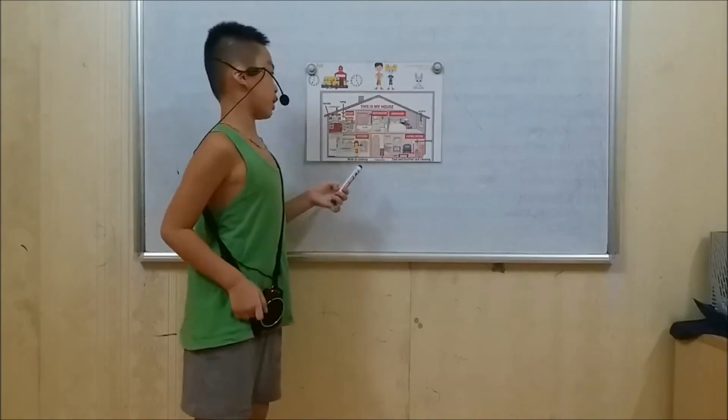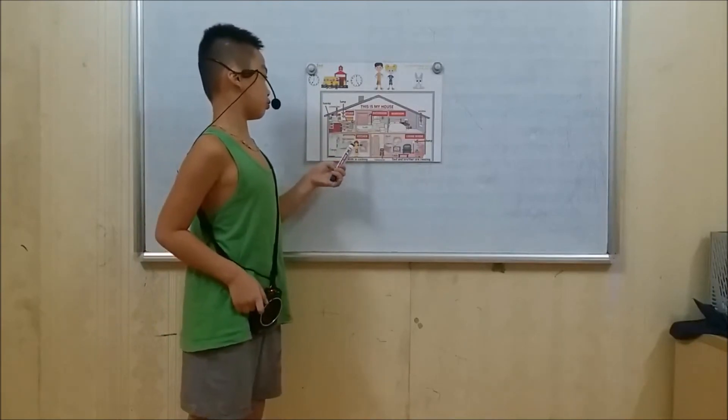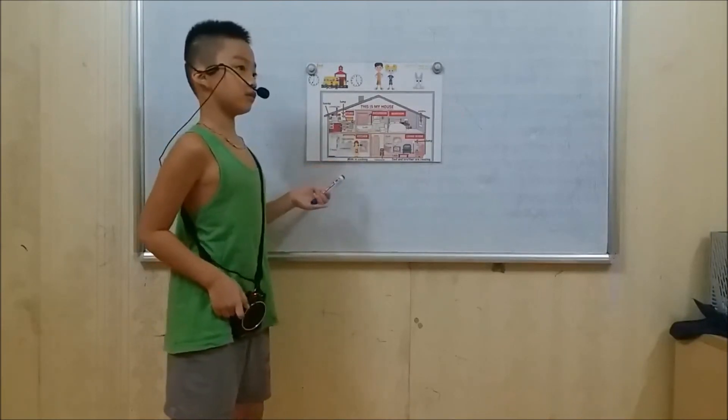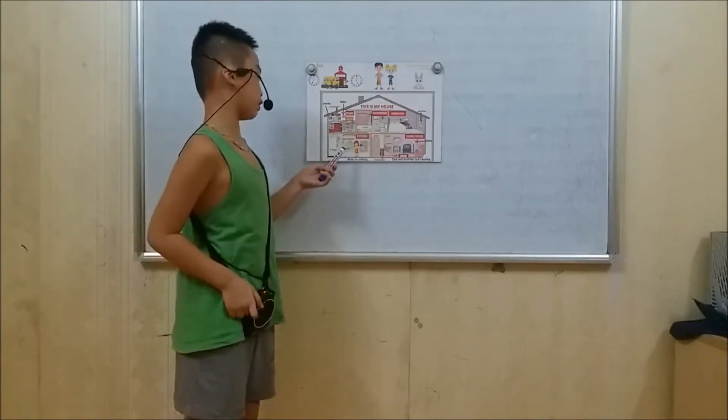Under the bedroom is a kitchen. There is a cooker. Next to the cooker is a sink and the cupboard. Next to the cupboard is a fridge.